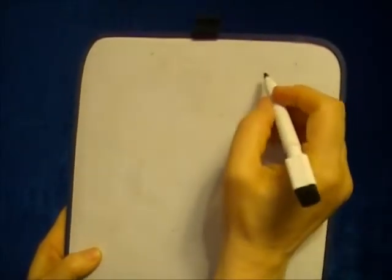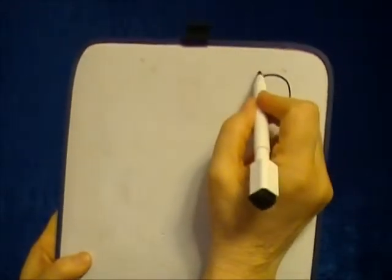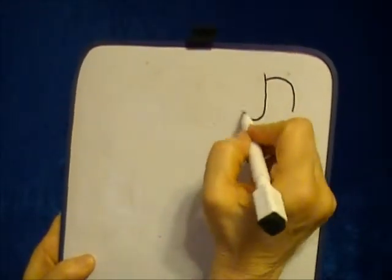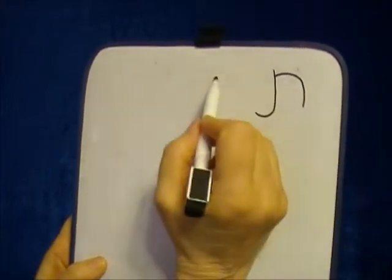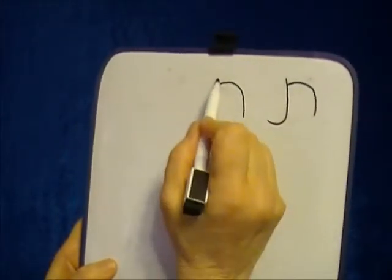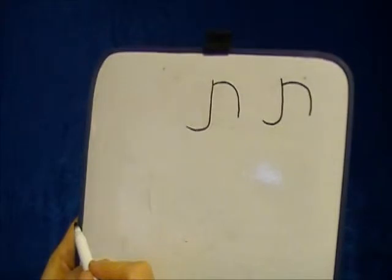Before we begin, we are going to see how to write the TAV in handwriting. The TAV in handwriting is almost identical to the block letter. We start on the right side and then the left side. Remember what distinguishes the TAV is this tail. One, two — that is the handwriting TAV.